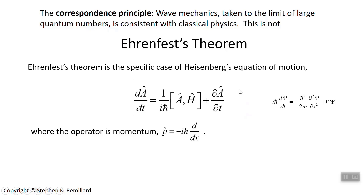The Heisenberg equation of motion gives the time derivative of operator A — a generic operator. It equals the commutator of that operator with the Hamiltonian H, plus the partial time derivative of that operator. The partial time derivative is only non-zero if what is being differentiated explicitly contains time. So if the expression for operator A contains the letter t anywhere, that partial of A with time is probably non-zero; otherwise it's zero. In the case of the momentum operator, which is minus i h-bar d/dx, there's no t anywhere in this expression, so the partial is zero.